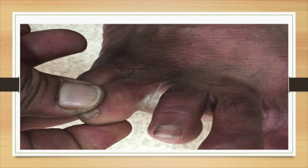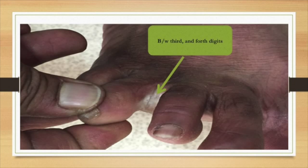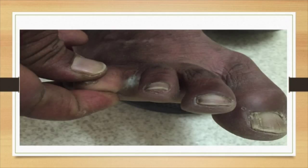Here I have labeled the lesion, which is seen between the third and fourth digit. The investigation you can perform is skin scraping, which is then analyzed using potassium hydroxide (KOH) to look for either hyphae or mycelia.